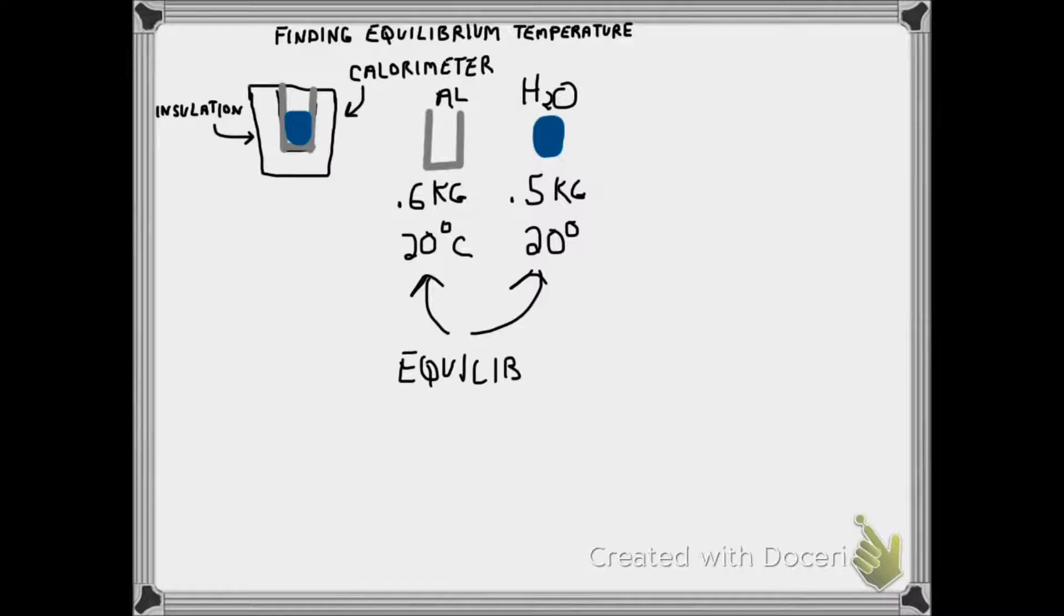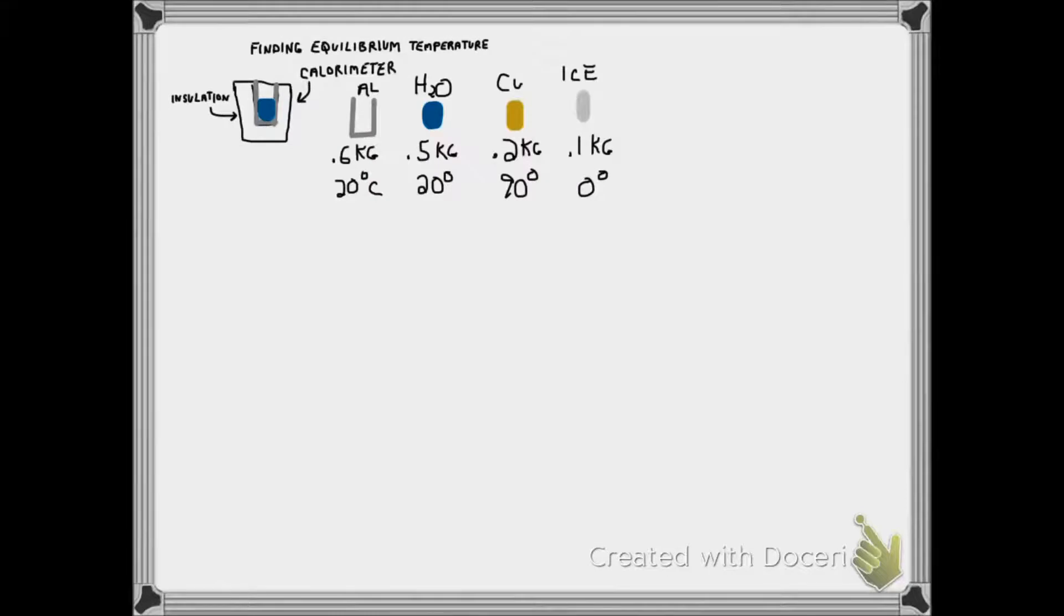We're going to be adding a couple of things: a piece of copper at 90 degrees C and an ice cube at 0 degrees. We're going to find the final temperature of all these things using the equation heat gained plus heat lost equals 0 from conservation of energy.